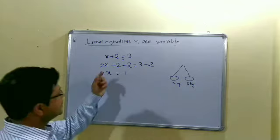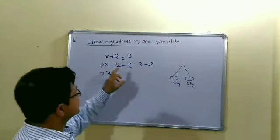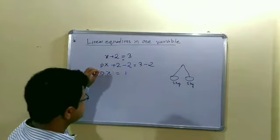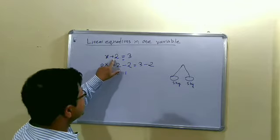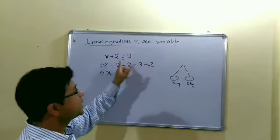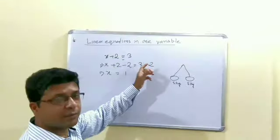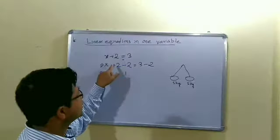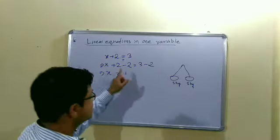So actually we are subtracting. From this we understood that if we take this 2 on the other side, we subtract - plus becomes minus. This sentence comes from there: plus on the other side becomes minus. This is the reason.